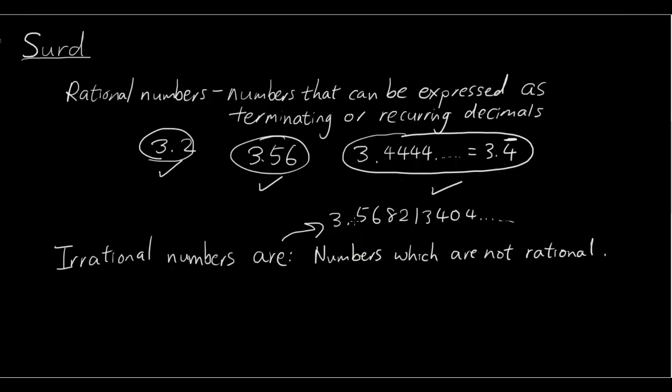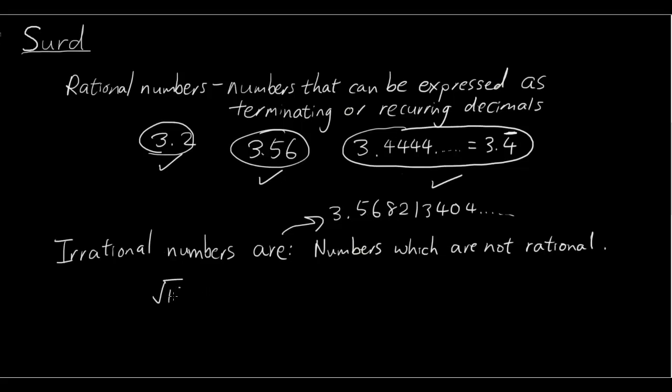If we have something like √16, that's just 4, right? Because 4 times 4 is 16. So, therefore, this is a rational number.